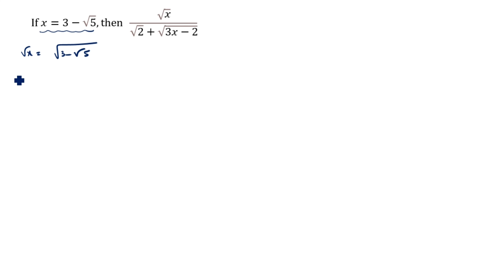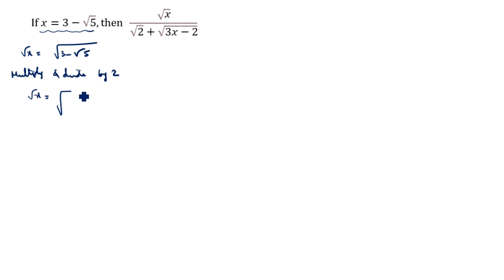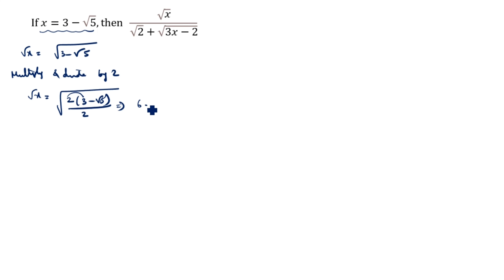After that, what we will do? Multiply and divide by 2. So √x is equal to √(2(3 minus √5)) divided by 2, which gives us √(6 minus 2√5) divided by √2. Multiply 2 into 3 — that gives 6 minus 2√5 divided by 2.